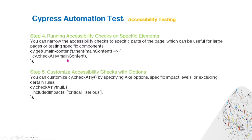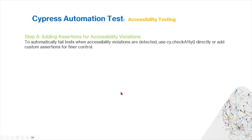You can also customize accessibility checks with options by specifying AXE options, specific impact levels, or excluding certain rules. Additionally, you can add assertions for accessibility violations. To automatically fail a test when accessibility violations are detected, use cy.checkA11Y directly or add custom assertions for finer control.